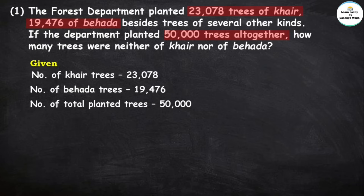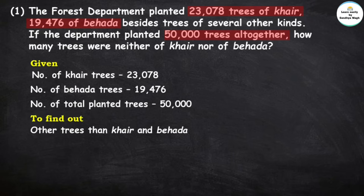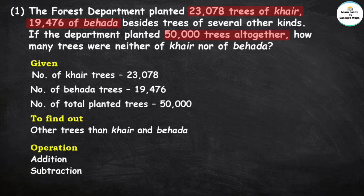What do we have to find out? The number of trees other than kher and bhaida. To find the answer, we first need to add the number of kher and bhaida trees together, and then subtract from the total.